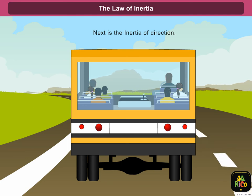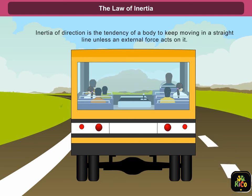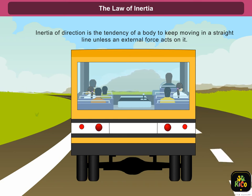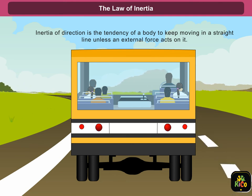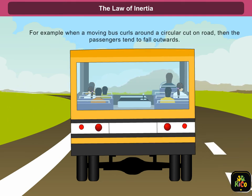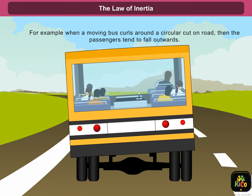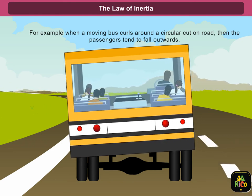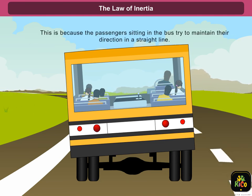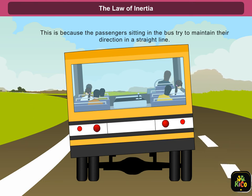Next is the inertia of direction. Inertia of direction is the tendency of a body to keep moving in a straight line unless an external force acts on it. For example, when a moving bus turns around a circular curve on a road, the passengers tend to fall outwards. This is because the passengers sitting in the bus try to maintain their direction in a straight line.